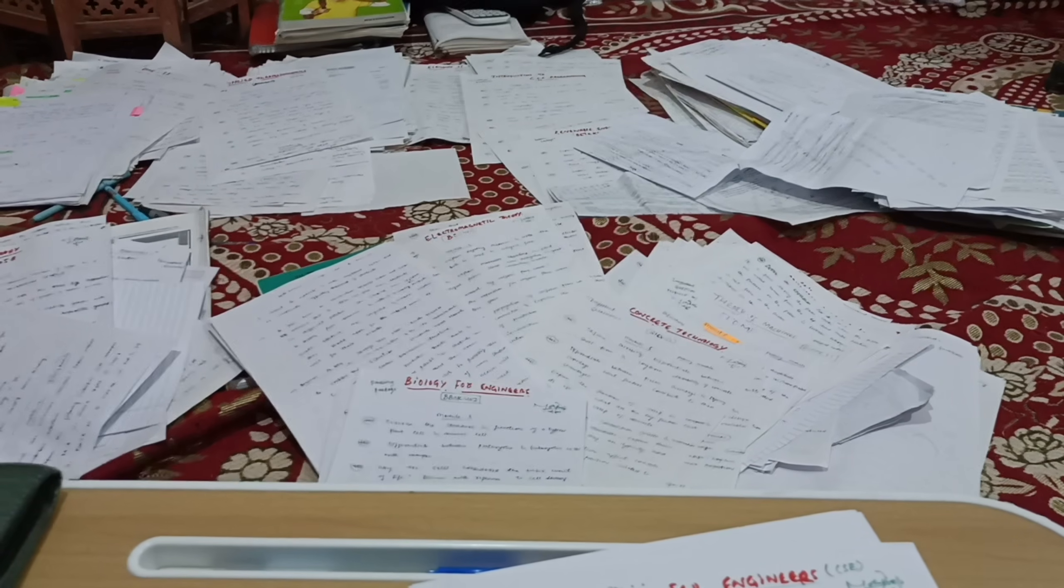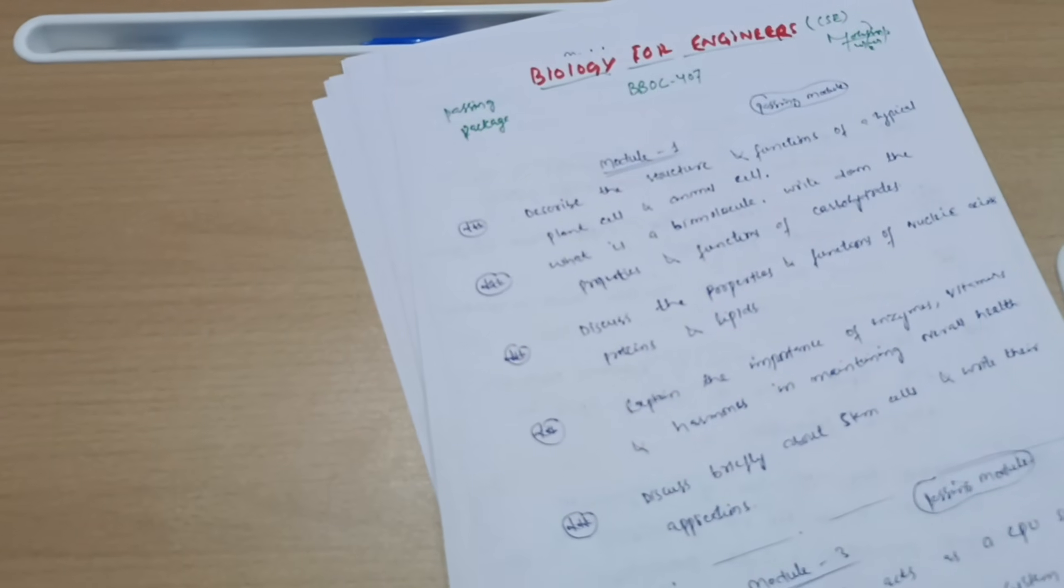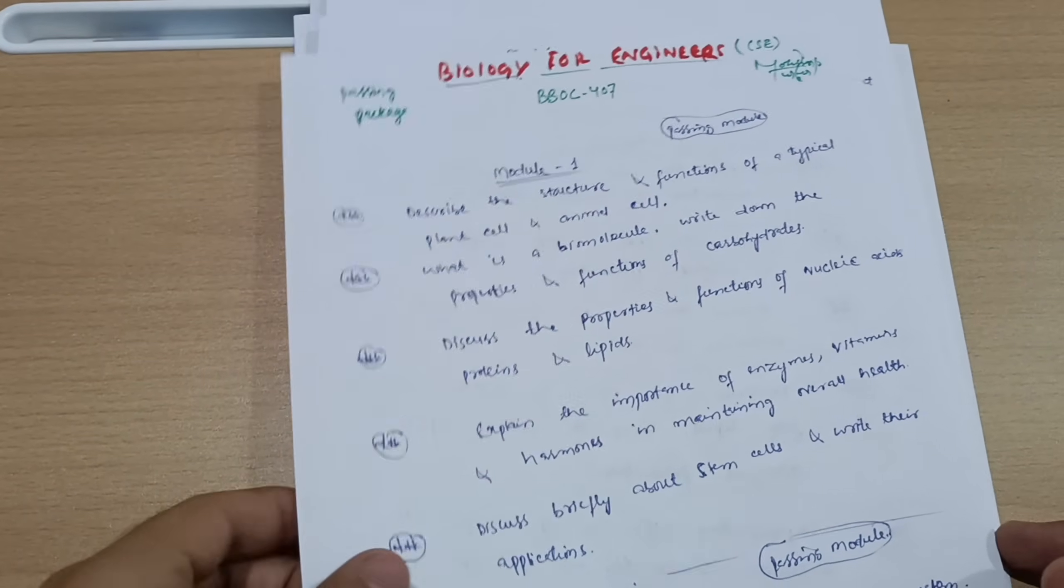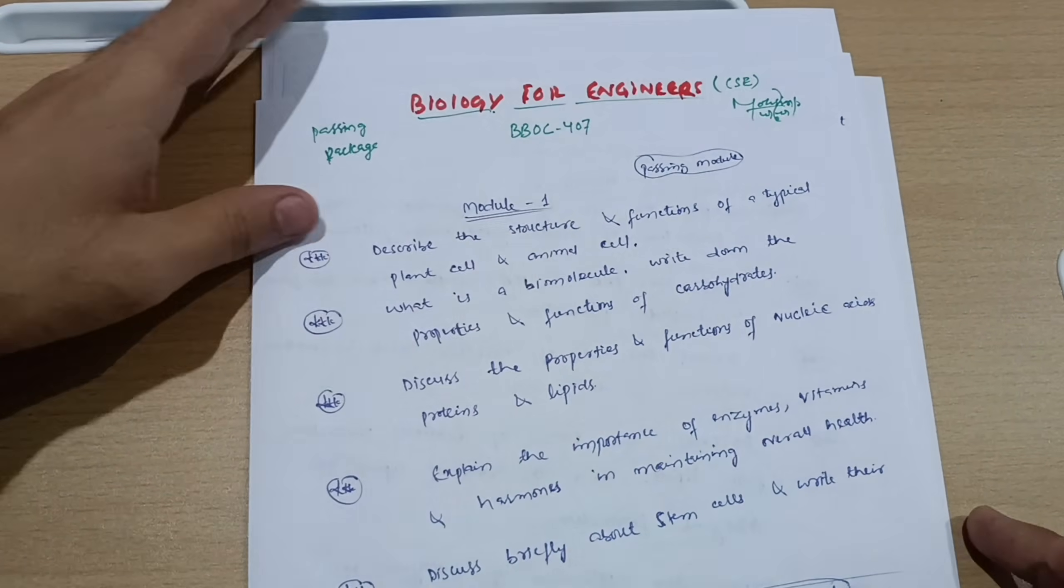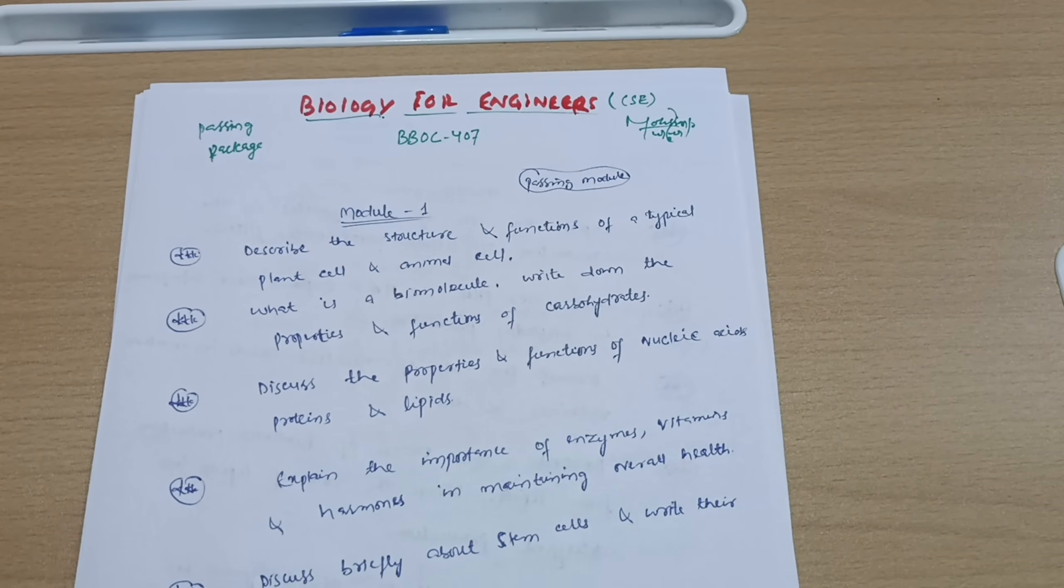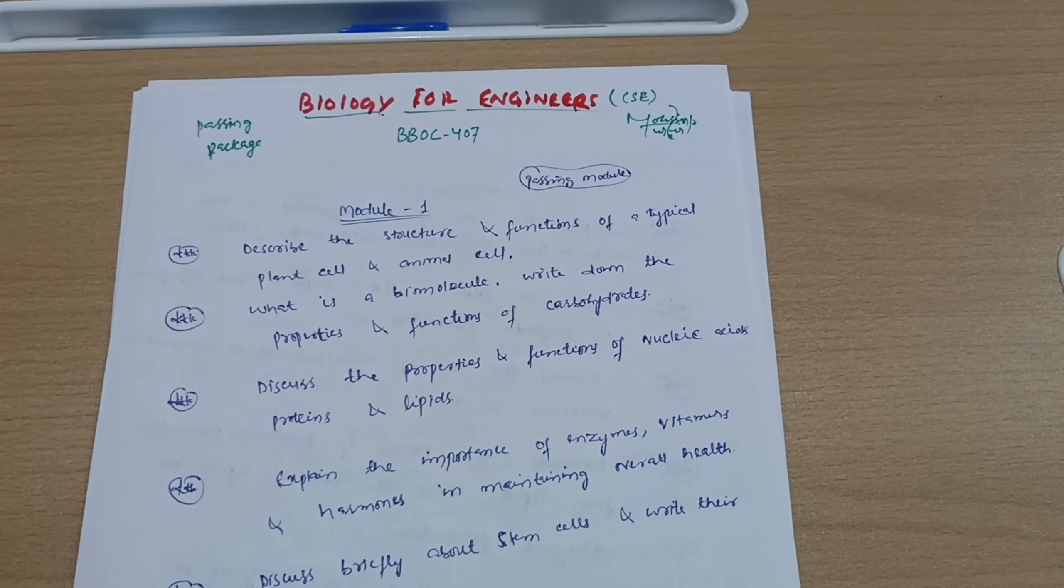Okay, so let's start without wasting time. Biology for Engineers, especially for CSE stream students, subject code BBOC407. Here is a passing package and some super important questions which you should refer and you can easily pass the biology subject, as it is a matter of concern for most students.